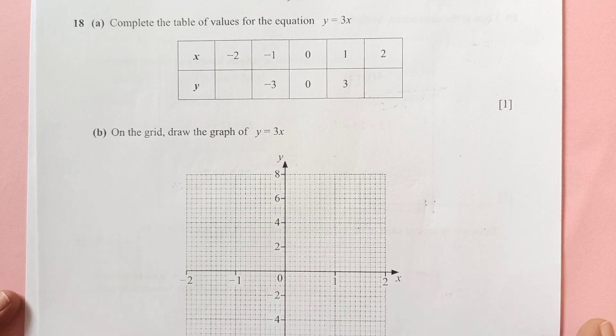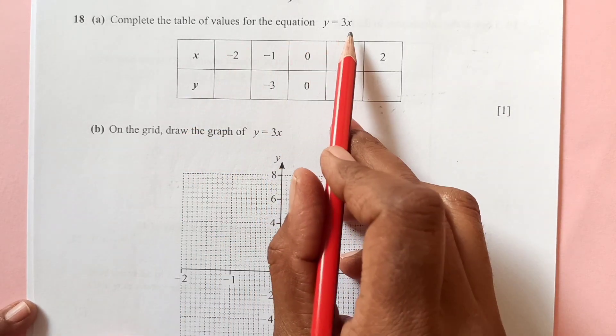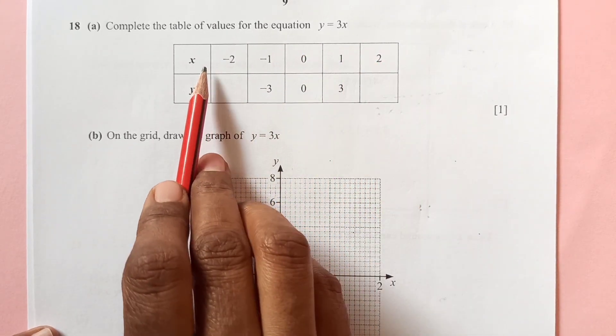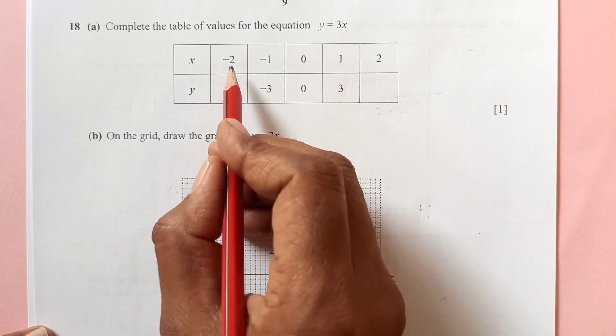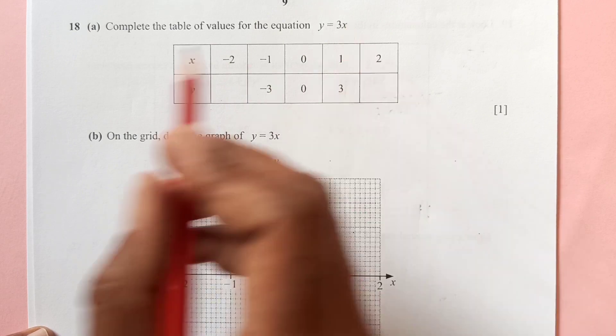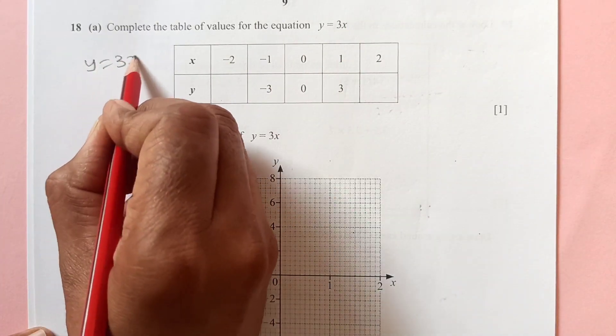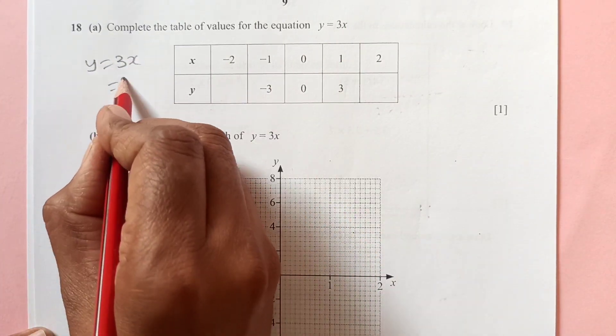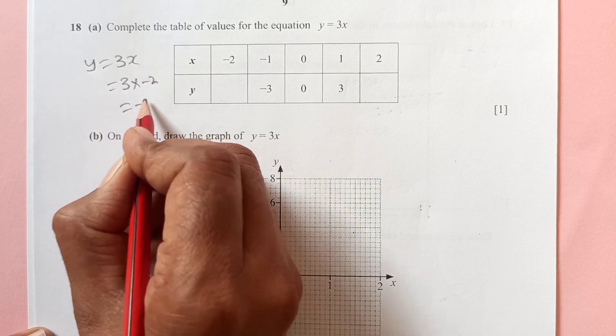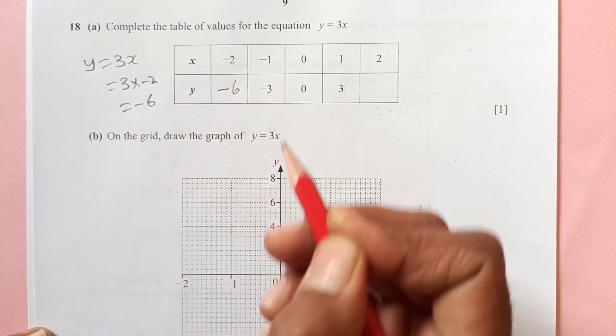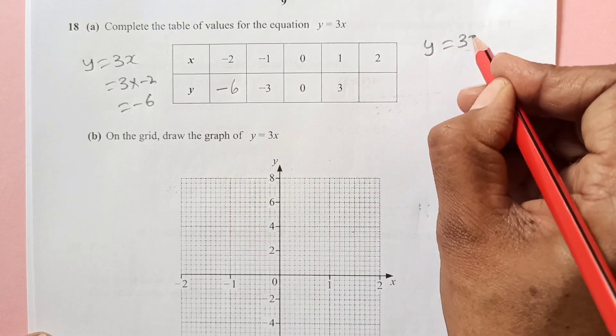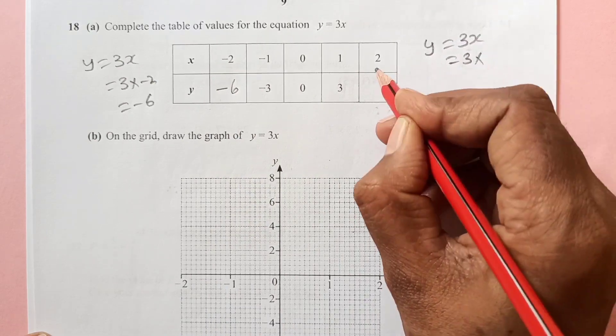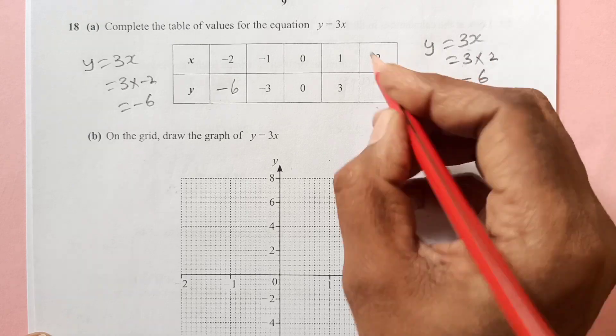Question number 18. Complete the table of values for the equation y equals 3x. We have values of x, but we have to find out values of y. As y equals 3x and our x is now negative 2, so this is negative 6. The second one, y equals 3x, 3 times 2, so it is 6.